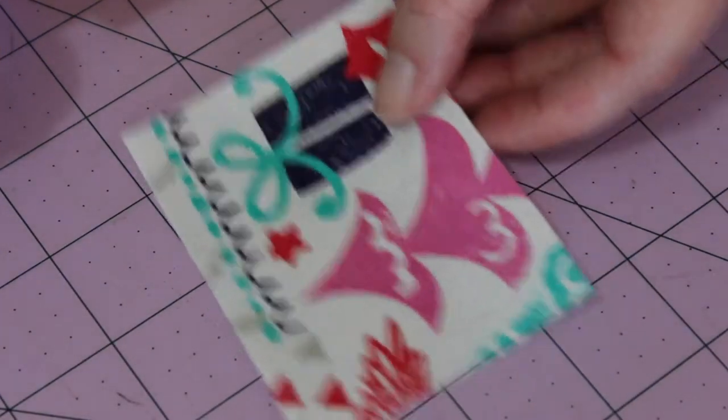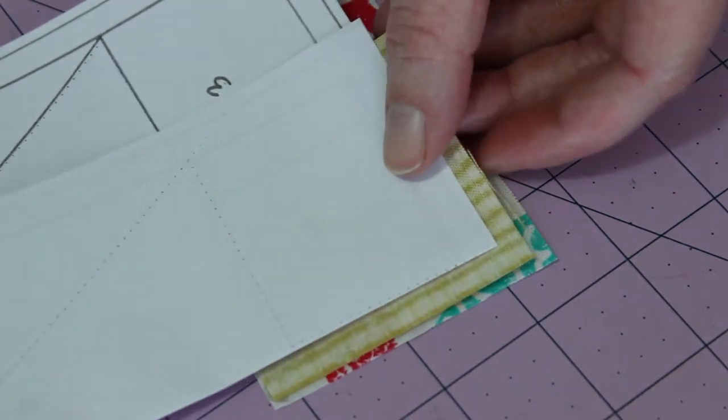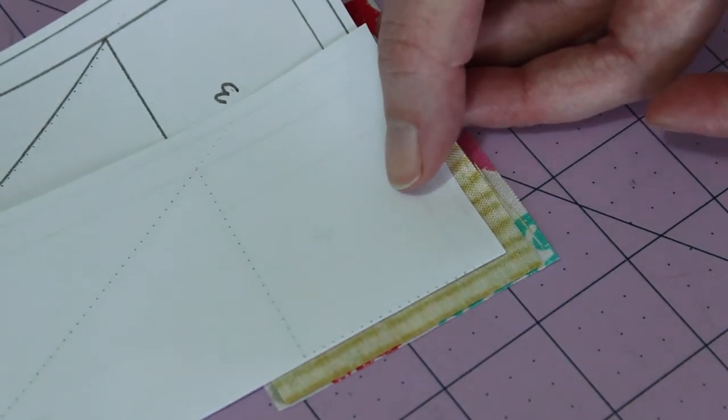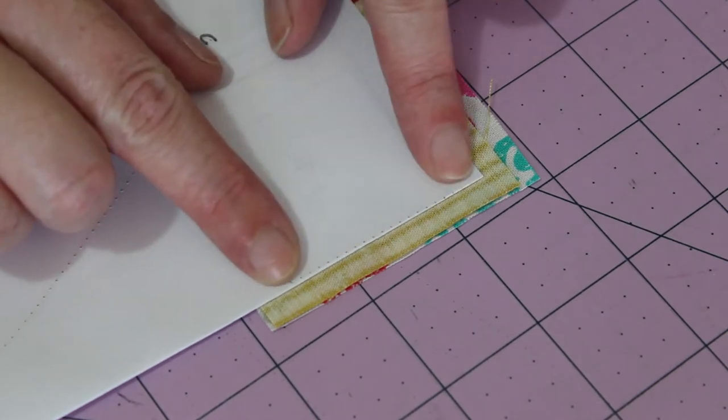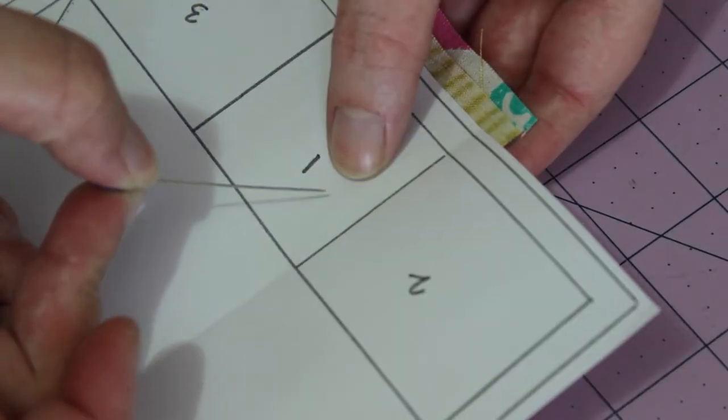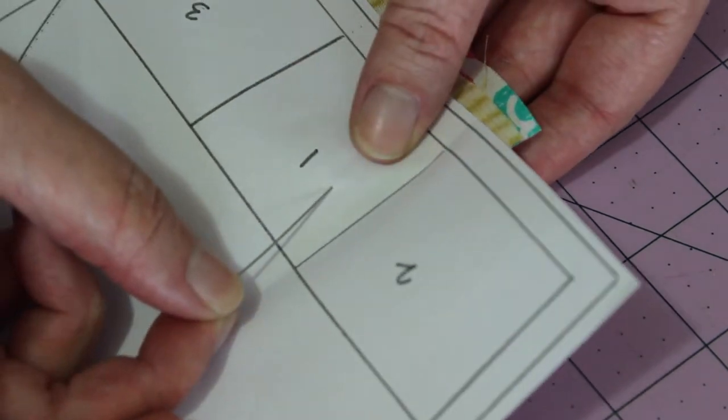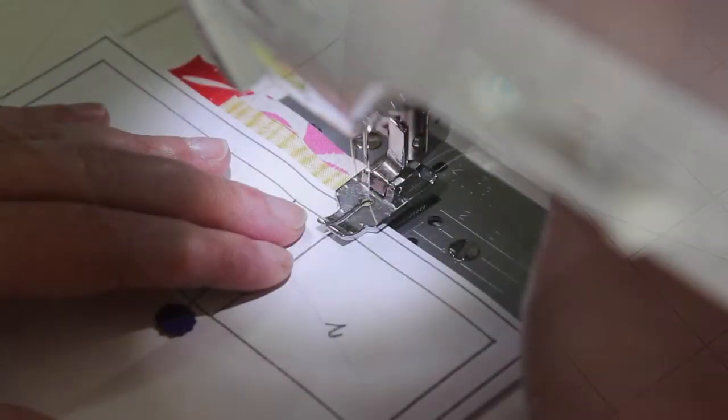Place the fabric for section two underneath the pattern right side up. Then carefully line together the top edges, ensuring that the bottom fabric reaches past all of the section two boundary lines. Once you're happy with the placement, open the pattern back out and carefully pin all three layers in place.